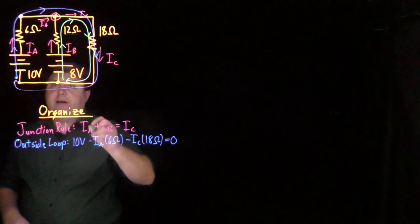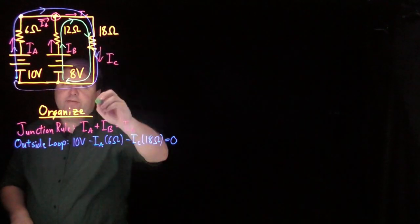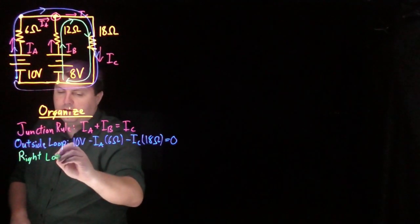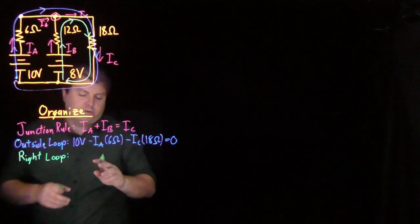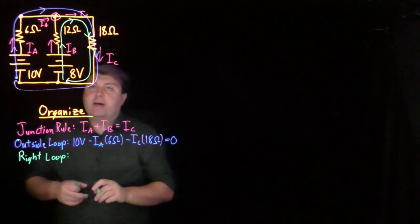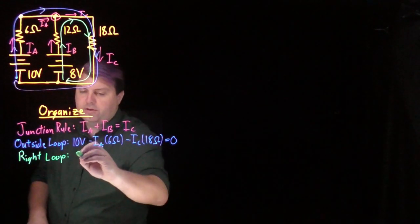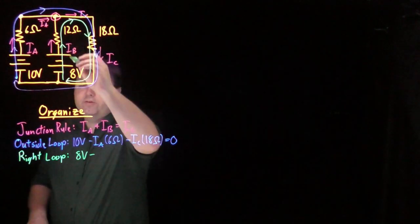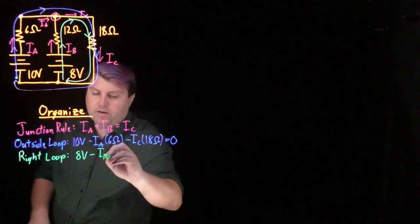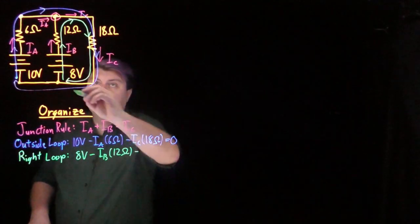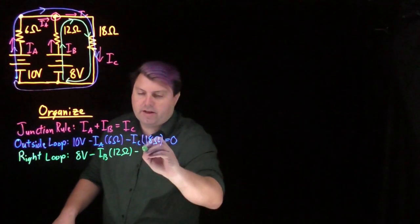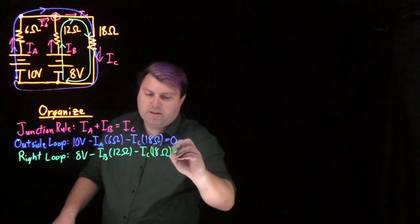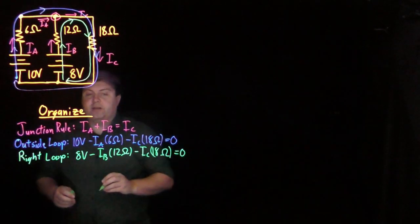I can take a look at my other loop. This is on the right side of the circuit, so I can call it the right loop. Going from here, I start with 8 volts, go up to this one which is Ib times 12 ohms, minus this resistor Ic times 18 ohms, and again equal to 0. So these are my organized steps, and now I'm ready to solve.